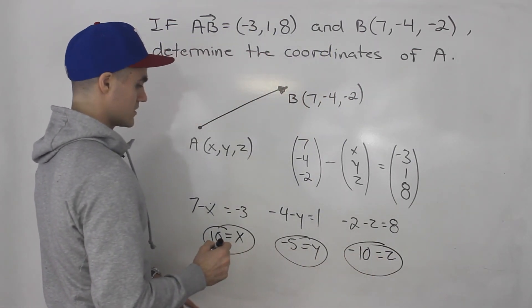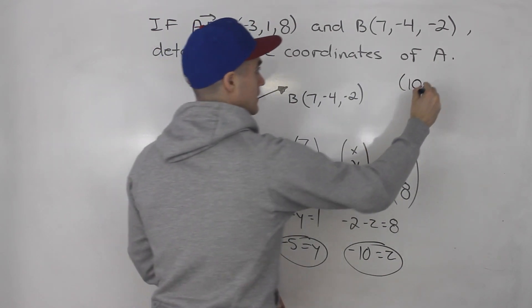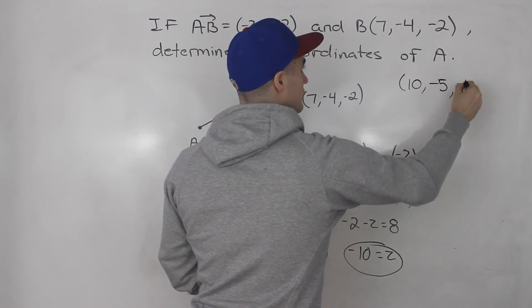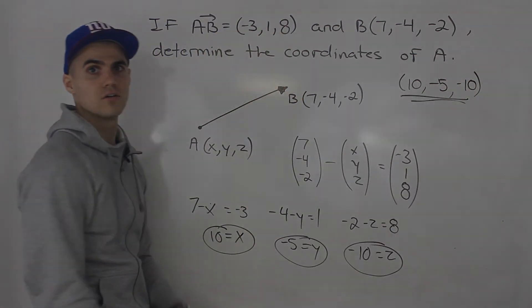All right, so the coordinates of A are 10 for x, -5 for y, and -10 for z. That is your final answer.